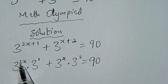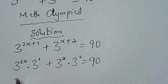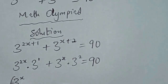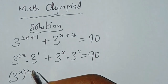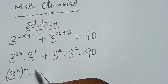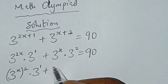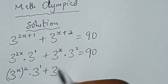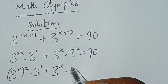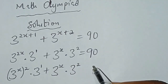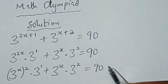Then from here we can rewrite this as 3 to the power of X, into brackets, then to the power of 2, multiplied by 3 to the power of 1, plus 3 to the power of X multiplied by 3 to the power of 2, equal to 90.